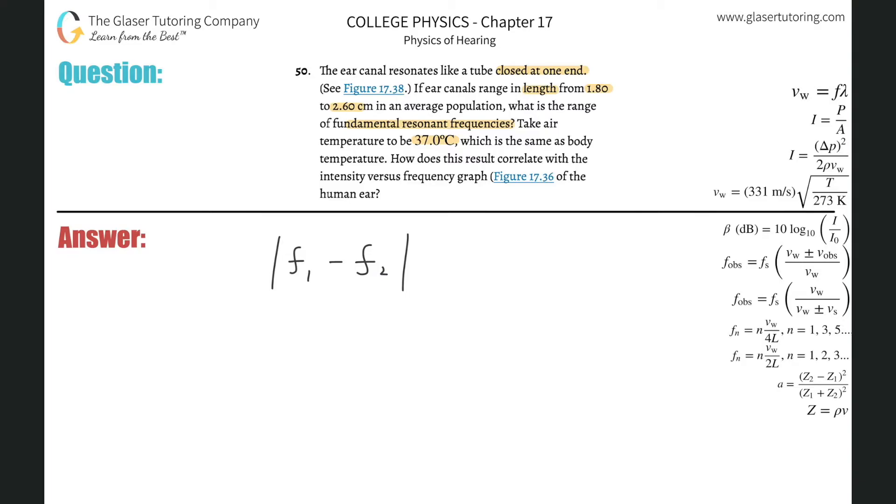We know that the tube is closed at one end, and that means we're going to be using the 4L formula. I'm going to write this out, so this will be the absolute value of the first frequency.